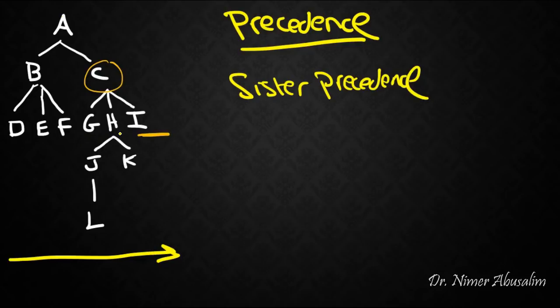Does I precede H? No, because I is not to the left of H. F precedes J because F is to the left of J. But not only that, we have to be very careful here. The mother of F, which is B, also precedes the mother of G, which is C.